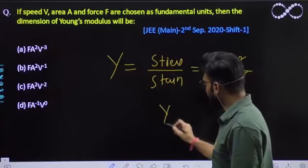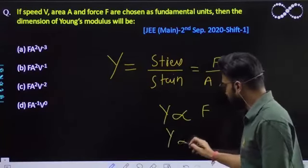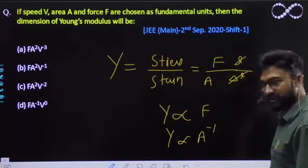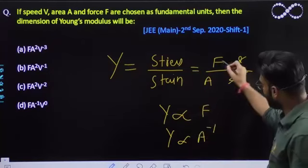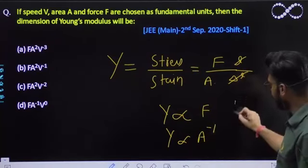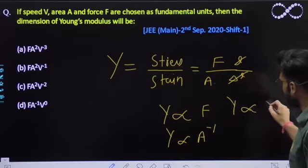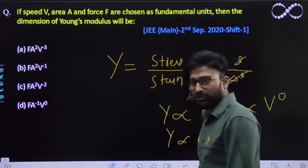So you can easily say that Y is directly proportional to F, Y is directly proportional to A ki power minus 1. Kya yeh speed par dependent hai? Kyunki force already aa gaya hai, area already aa chuka hai. Toh kya V par dependent hai? Young's modulus V par dependent nahi hai. Toh V ki power hum zero rakh sakte hain.